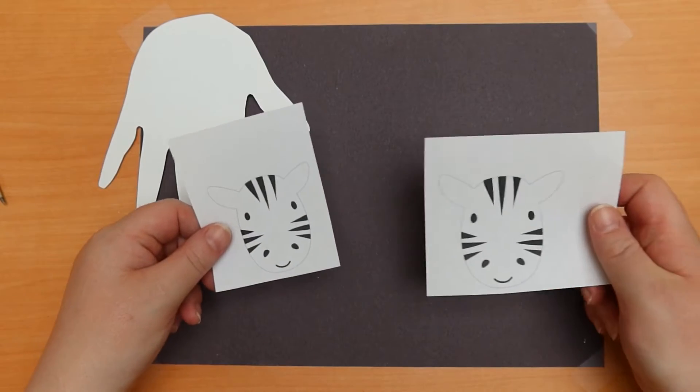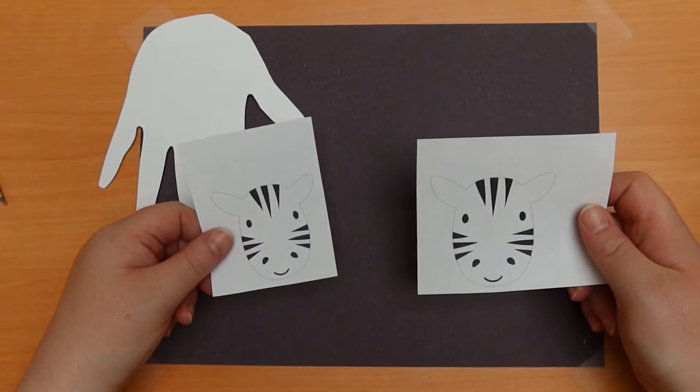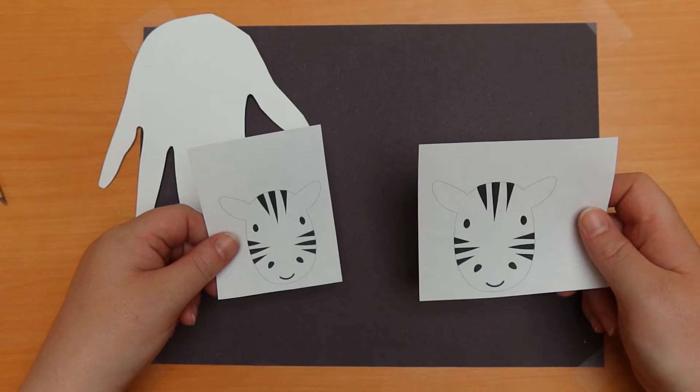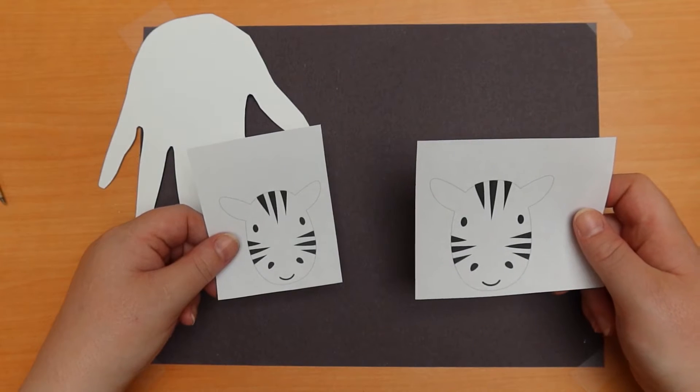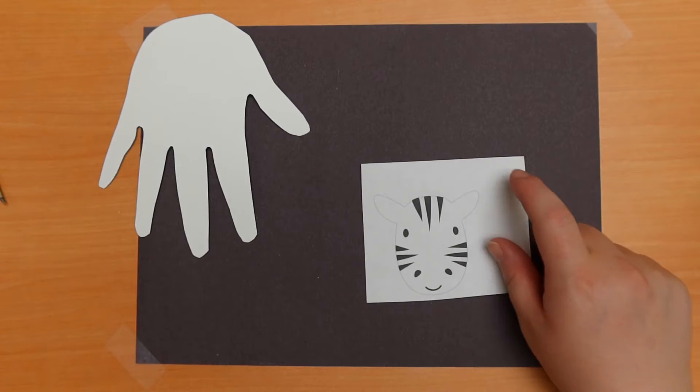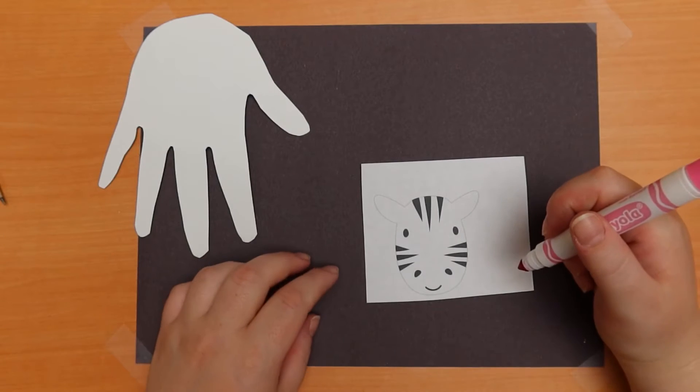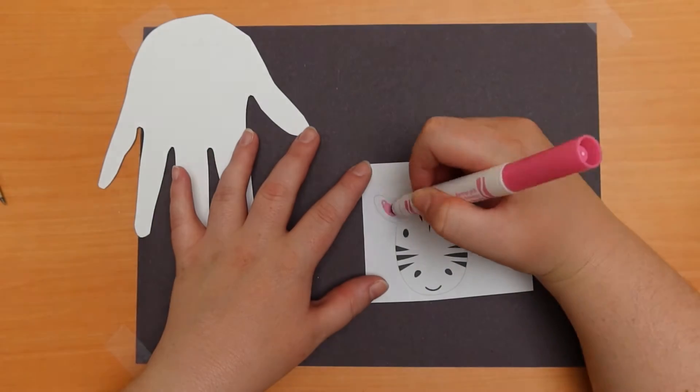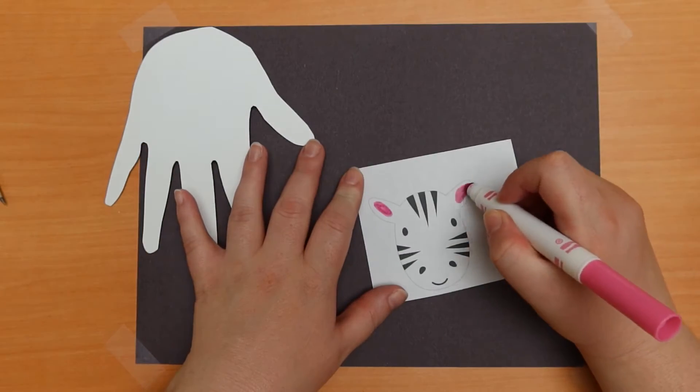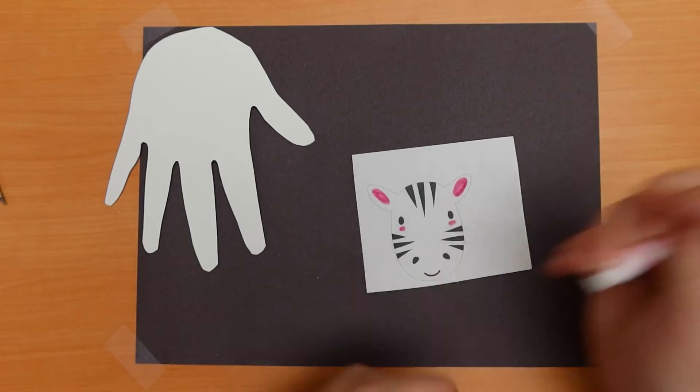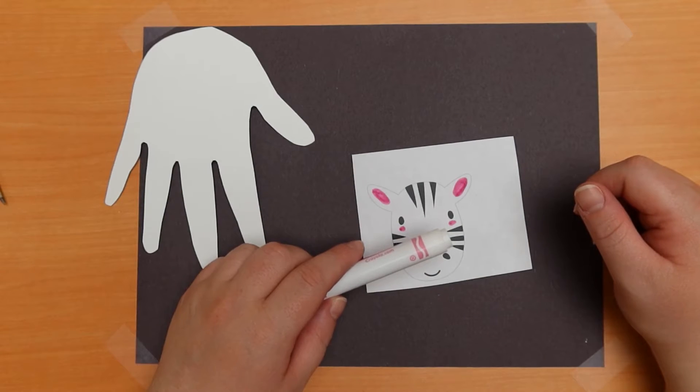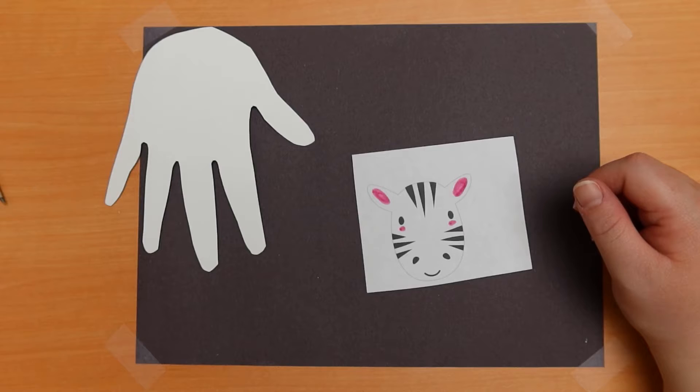We have two different face sizes. One is larger than the other. Choose which face you want, and we will add some color. Let's color the inner ears pink, and we'll add a little bit of pink to underneath the eyes. We will then use a gray marker to fill in the muzzle area of the face.